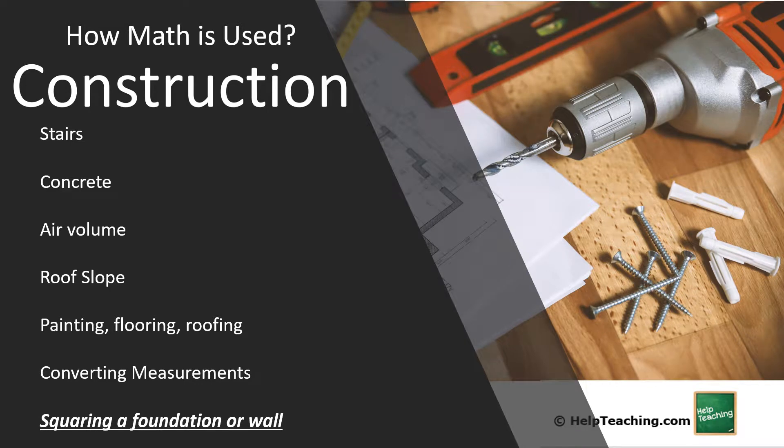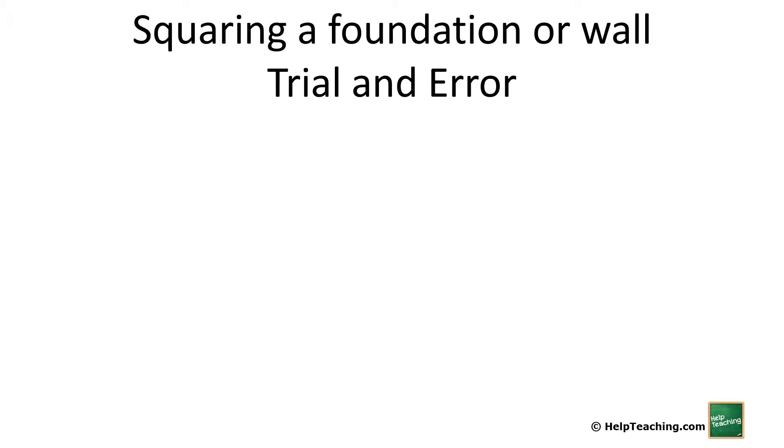Welcome to this series on how math is used in construction. In this lesson, we'll be looking at squaring a foundation or a wall. When we're doing construction, making sure that things are square is very important. In our foundations, it's what sets up the whole rest of the building. If our foundation is out of square, everything else goes wrong during the whole construction. So we want to make sure we get this really correctly. So let's look at three different methods.